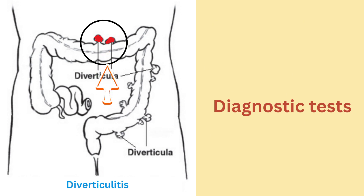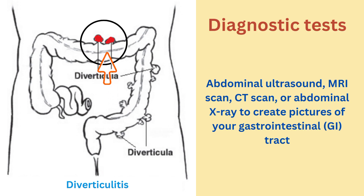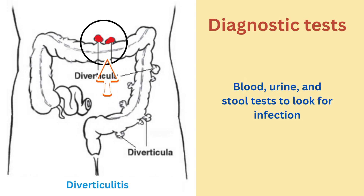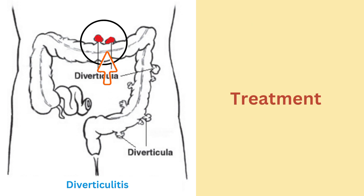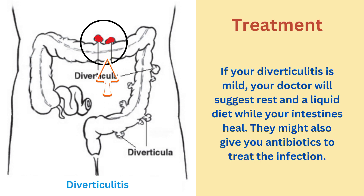Diagnostic tests for diverticulitis include abdominal ultrasound, MRI scan, CT scan, and abdominal X-ray to create pictures of your GI tract. Other options include blood, urine, and stool tests to look for infection, and colonoscopy to examine the inside of your GI tract.